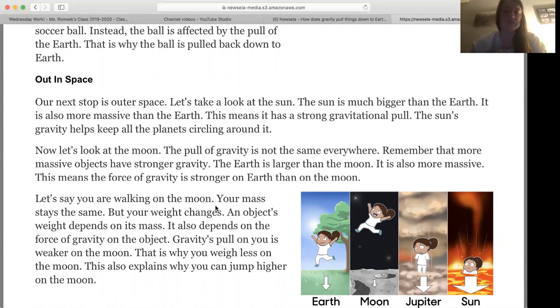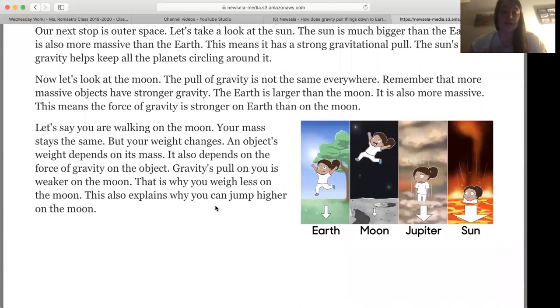Now let's look at the moon. The pull of gravity is not the same everywhere. Remember that more massive objects have stronger gravity. The Earth is larger than the moon. It is also more massive. This means the force of gravity is stronger on Earth than on the moon, which is why the moon is staying around the Earth, because it's bigger and it pulls it in. Let's say you were walking on the moon. Your mass stays the same, but your weight changes. An object's weight depends on its mass, and it also depends on the force of gravity on the object.